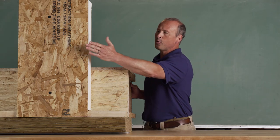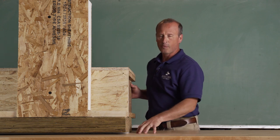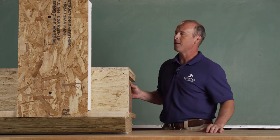So we have a continuous load path from the SIP to the shoe to the sill plate to the foundation. We carry all of this down into the ground so that when the wind blows the building can't move.